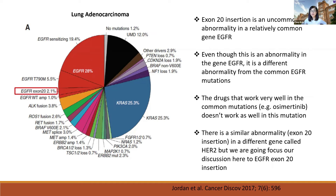A few things I want to highlight: Exon 20 insertion is an abnormality that is uncommon in a gene called EGFR that is relatively common. You can see in this pie chart that the piece in red all represents EGFR, but the Exon 20 only represents a small piece of it. So it is an abnormality that is different from the common mutation in the gene EGFR. If you search online for EGFR lung cancer, really the bulk of information you're going to see is for the common EGFR mutations and not for Exon 20. And drugs that work very well in the common mutations — an example would be a drug called Osimertinib — really don't work very well for Exon 20.